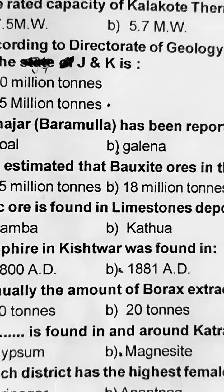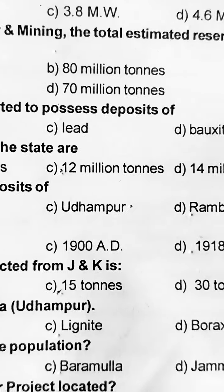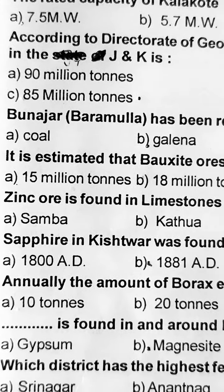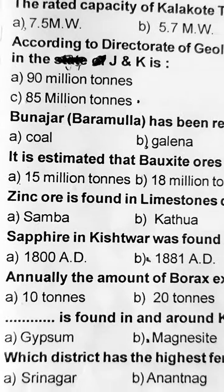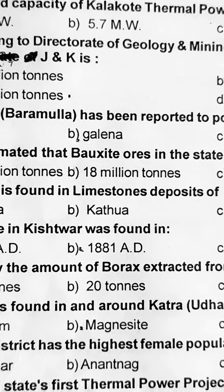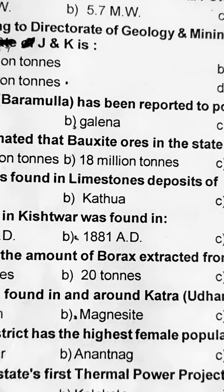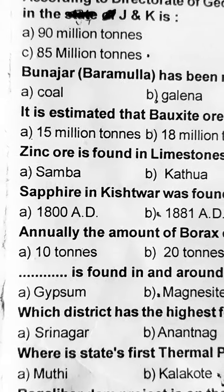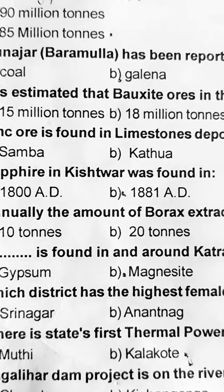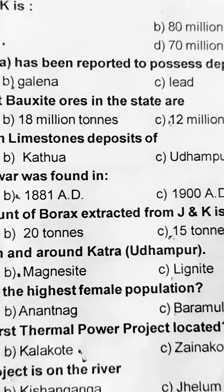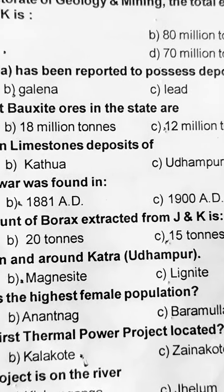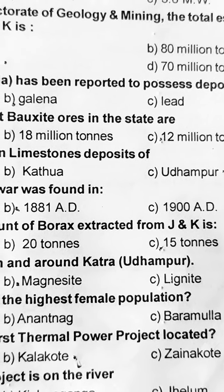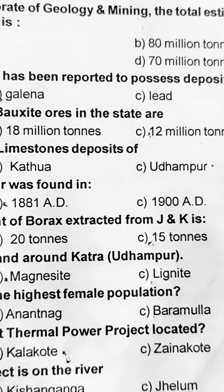Next: zinc ore is found in the limestone deposits of — yeh Udhampur mein paai jate hain. Next: Sapphire in Kishtwar was found in — iska B part option hai, eighteen hundred and eighty one AD, 1881. Next: annually the amount of borax extracted from J&K is — iska sahi option hai C part, 15 tons.